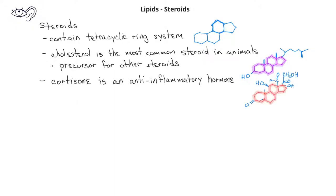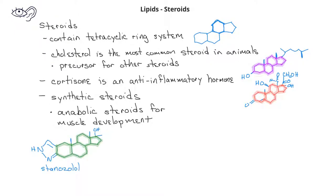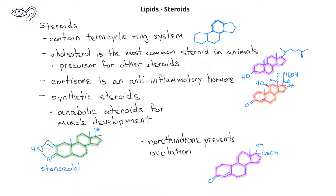Cortisone is another example of a steroid. Even though it has many more oxygens, it still has the same four-ring tetracyclic system that we expect to see in steroids. Cortisone is an anti-inflammatory hormone. There are also synthetic steroids. Anabolic steroids can aid in muscle development. Danazolol is one example of an anabolic steroid. Another synthetic steroid, norethindrone, prevents ovulation. Again, in both of these synthetic steroids, we still see the tetracyclic ring system expected of steroid compounds.